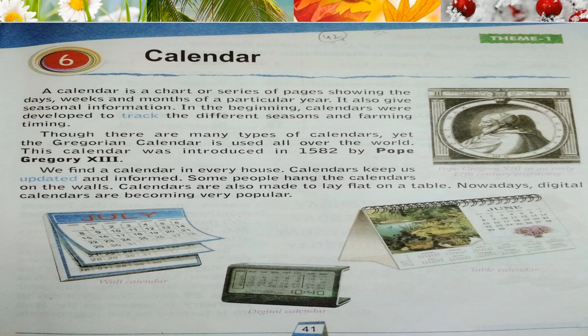A calendar is a chart or series of pages showing the days, weeks and months of a particular year. I think all of you have seen a calendar at your home. A calendar is a chart which has all the days, weeks and months of a particular year. It also gives seasonal information.